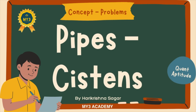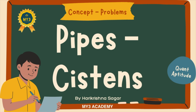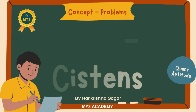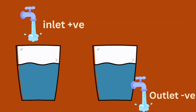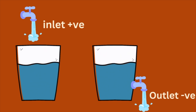Pipes and Systems and Time and Work both chapters have a similar approach — the hidden plugin strategy. The only difference is that in Time and Work you see work as constant, in Pipes and Systems you see tank capacity as constant. In Time and Work you have only positive efficiency, but in Pipes and Systems you have both positive and negative efficiency.